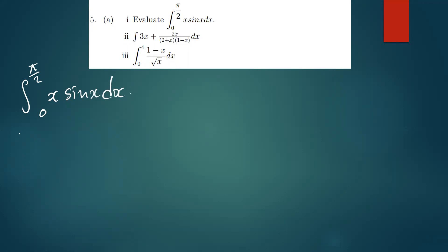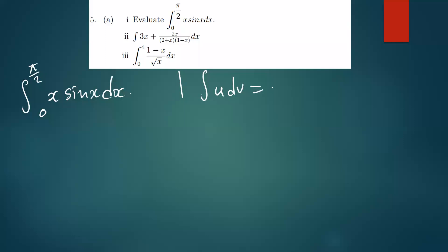This is a straightforward question. There are many methods to solve it, and I'm going to use the simplest, which is integration by parts. According to integration by parts, the formula is: the integral of u dv equals uv minus the integral of v du.